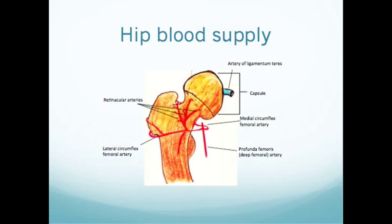This disruption changes our management. However, with extracapsular fractures — intertrochanteric or subtrochanteric — the blood supply is likely still intact, meaning the fracture may be amenable to fixation rather than arthroplasty, which means replacement of the joint.